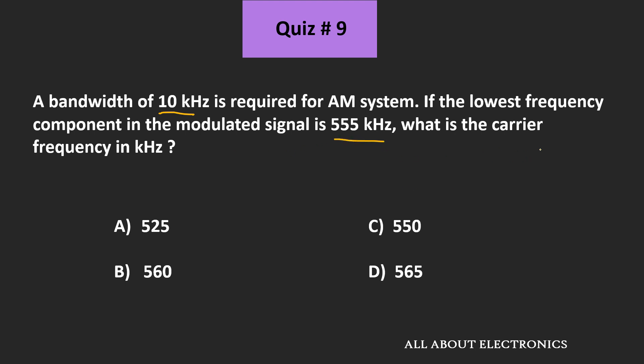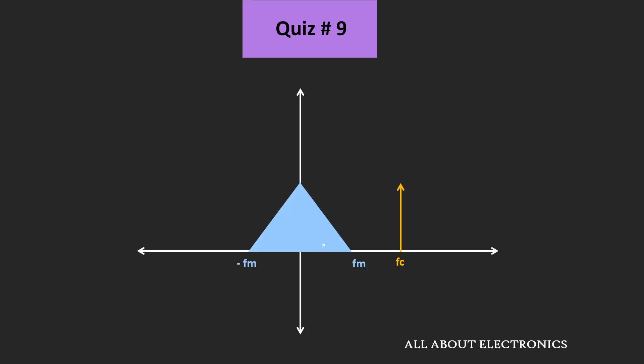We are asked to find the carrier frequency. The required bandwidth for the AM system is 10 kHz. We can say that 2Fm equals 10 kHz, which means the value of Fm is equal to 5 kHz.